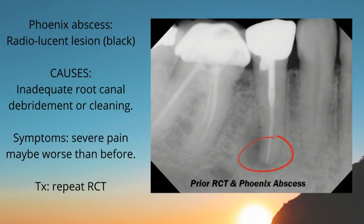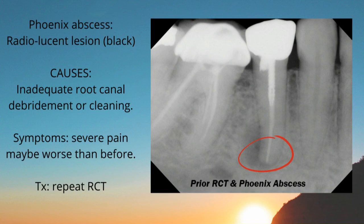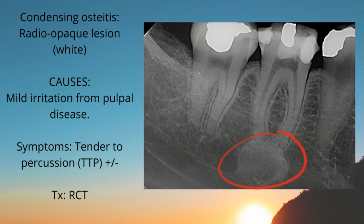Another diagnosis is the phoenix abscess, which appears as a radiolucent lesion and is caused by inadequate root canal debridement or cleaning. It is a mistake made by many dentists, so you need to warn your patient that they may experience severe pain, possibly worse than before, if the root canal debridement was inadequate. The treatment is re-treatment — repeating the root canal procedure all over again. Lastly, condensing osteitis appears as a radiopaque lesion, white in color, due to mild irritation from pulpal disease. The symptom is tenderness to percussion and the treatment is root canal treatment, though it is rarely seen.